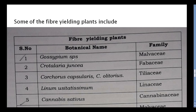Some of the fiber yielding plants include: Gossypium species, which belongs to the family Malvaceae; Crotalaria juncea, which belongs to the family Fabaceae; Corchorus capsularis and Corchorus olitorius, which belong to the family Tiliaceae; Linum usitatissimum, which belongs to the family Linaceae; and Cannabis sativus, which belongs to the family Cannabinaceae.